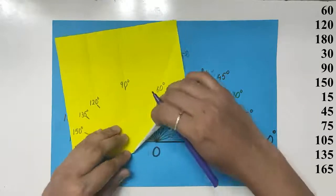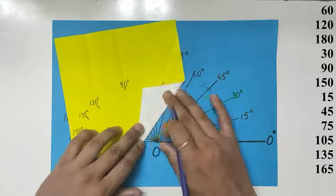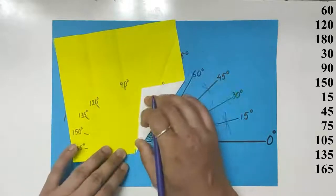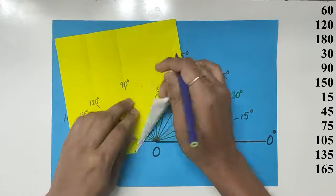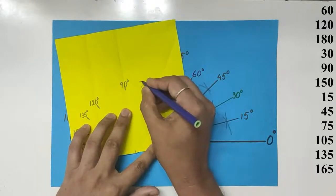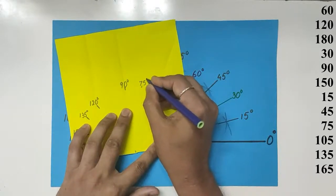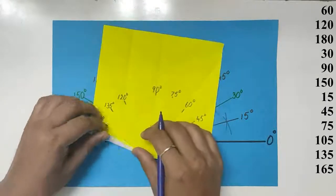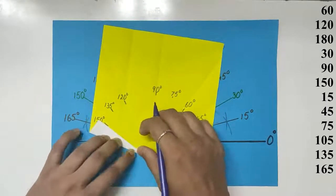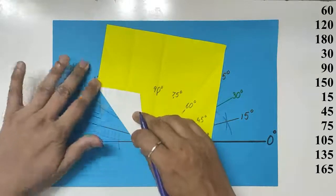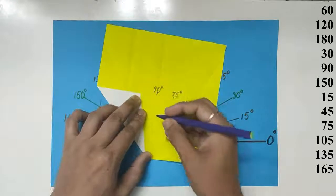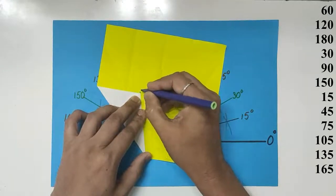Fold 15 over and fold it on the 45 degree line. And that will give you 75 degrees. That's 75. In the same way on the other side, fold the 165 and fold it on 135 degree line to get 105 degrees.